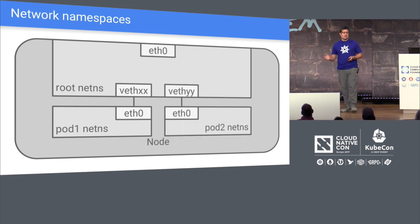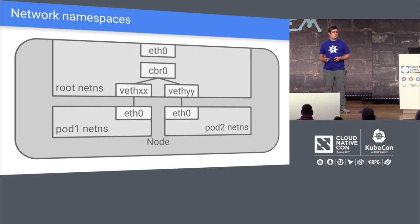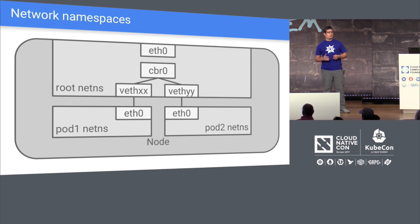We can do this many, many times — one node can host several namespaces for many pods. We want them to talk to each other, and we're going to use a very familiar construct: just a bridge. It uses L2 technology, MAC and ARP. If you don't feel comfortable with this stuff, go Google it — there's tons of documentation.